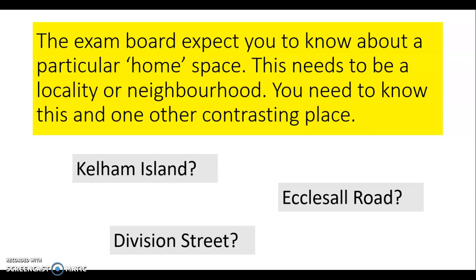You'll also see in the yellow box that you need to know a lot about this home place, and you also need to know about another contrasting local place. That doesn't mean local to you, but it means a small area local to somebody else. Thinking back to that first lesson in September, I will have asked perhaps students from rural areas and the Peak District to tell you about their local area and home place. In your folder you should find a table showing notes about your home place and somebody else's location.